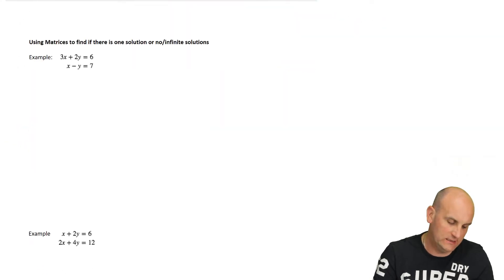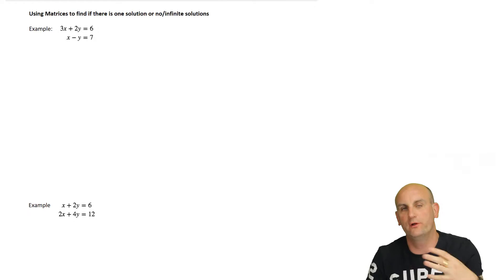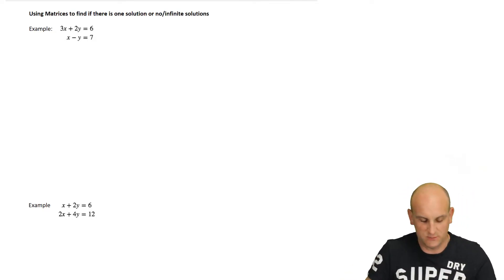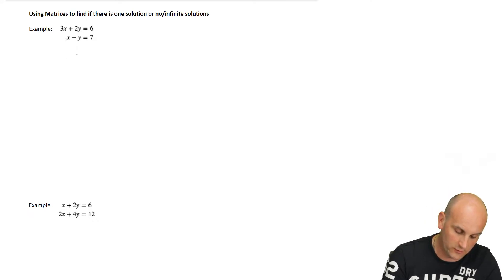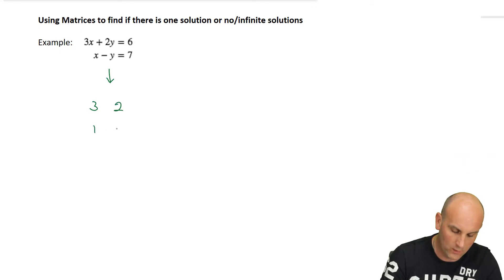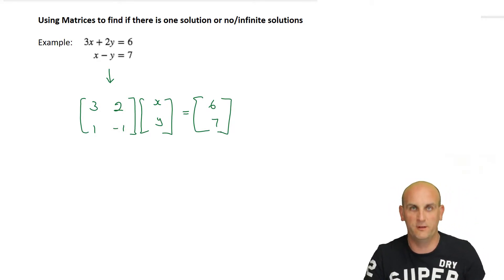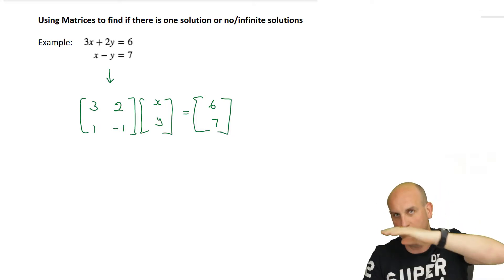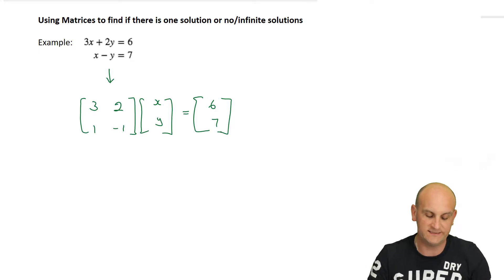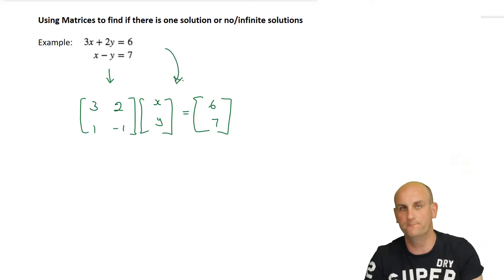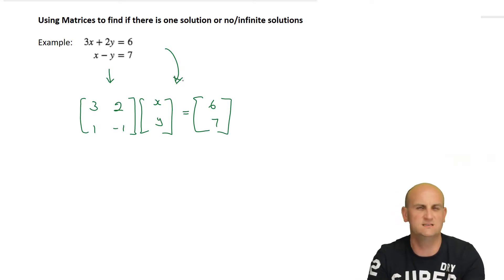Moving on to using matrices to find whether there is one solution, no solution, or infinite solutions. Using matrices, we can rewrite a system — for example, the matrix [3, 2; 1, -1] times the column vector [x; y] equals [6; 7]. When you multiply those matrices, going across one row and down one column, you get 3X plus 2Y equals 6 and X minus Y equals 7. All we've done is written the equation in a different form. In a later video we'll show you inverses and matrix algebra to work this out, or alternatively just use your calculator.